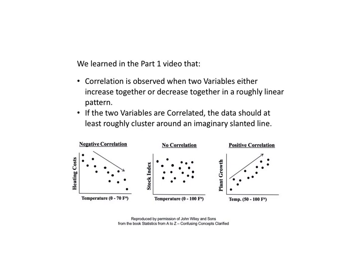OK. Let's begin our detailed look into each key. We learned in the part one video that correlation is observed when two variables either increase together or decrease together in a roughly linear pattern.